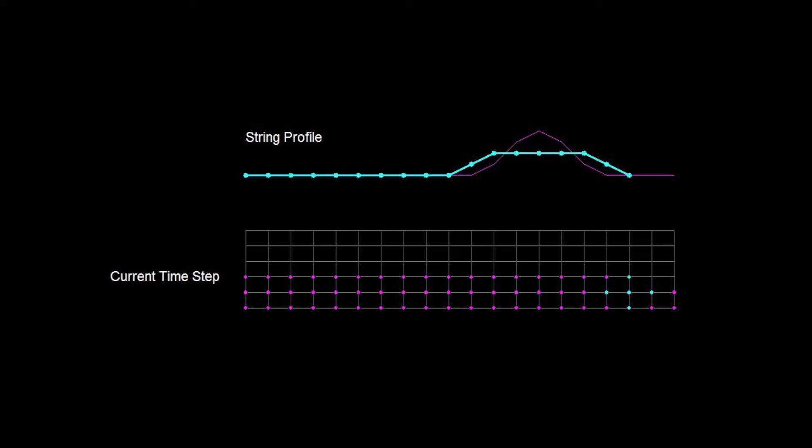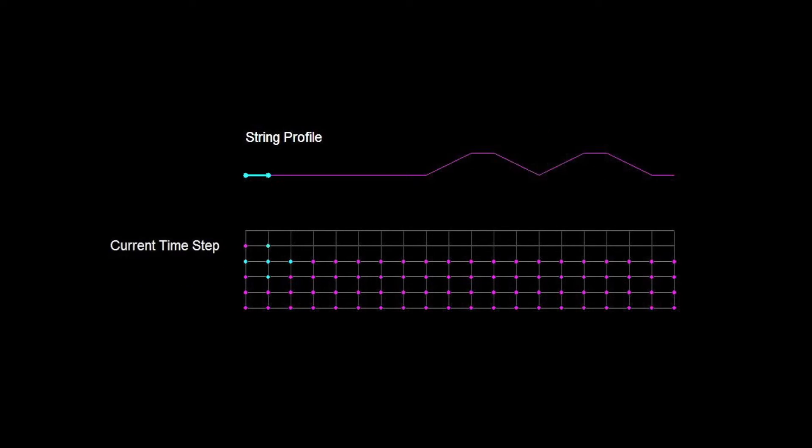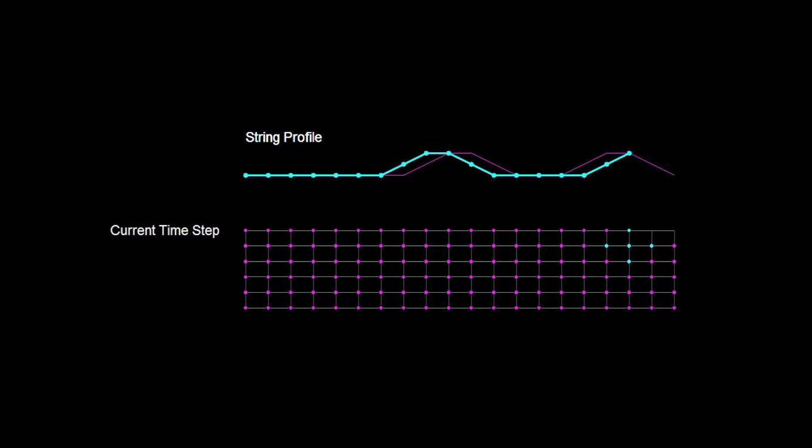This takes us into the more mainstream world of time-stepping methods, where we simulate our system over a grid and then update the solution at an audio sample rate. As you can imagine, trying to compute sound in this way comes with a lot more computational overhead than earlier techniques, meaning that up until recently, a lot of our algorithms could only operate offline.